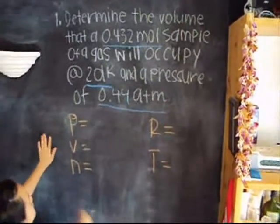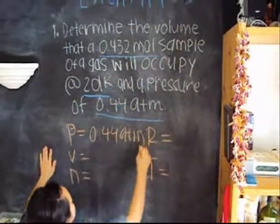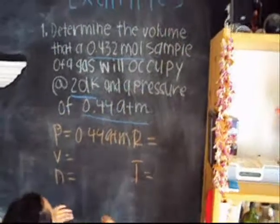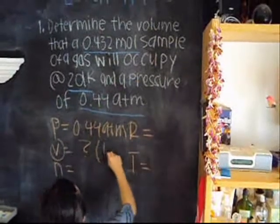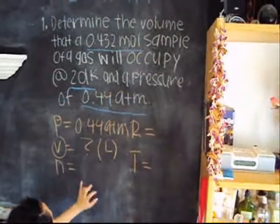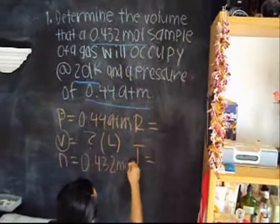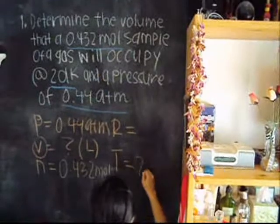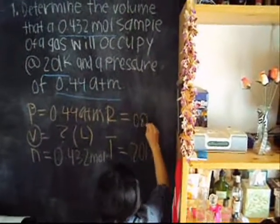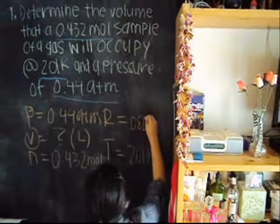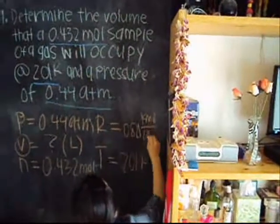Since you are given 0.44 ATM, that is your pressure. The volume is what you have to find, in liters. The number of moles is 0.432 moles. Your temperature is at 201 Kelvin. And your constant will always be 0.0821 K·mol over L·ATM.